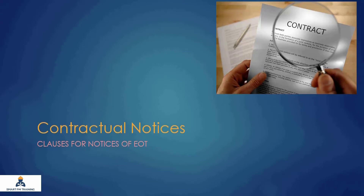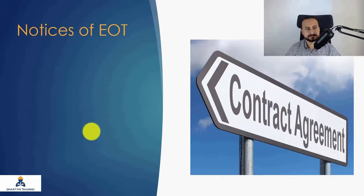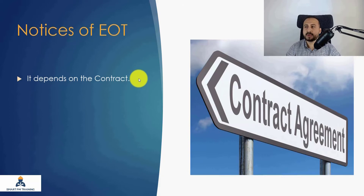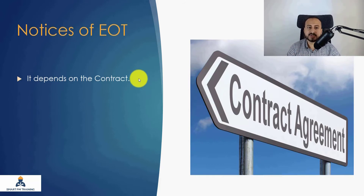We are starting Section 2, which is related to the relevant contract clauses for extension of time and how to identify events. In this lecture, we will talk only about the clauses for the notice of extension of time. The notice always depends on the contract — 99% of all contracts require a notice of extension of time, because the client has to be prepared for any potential risks in project completion. Most contracts will defend and protect the client from any EOT risks, which is why notice is normally required under any contract.